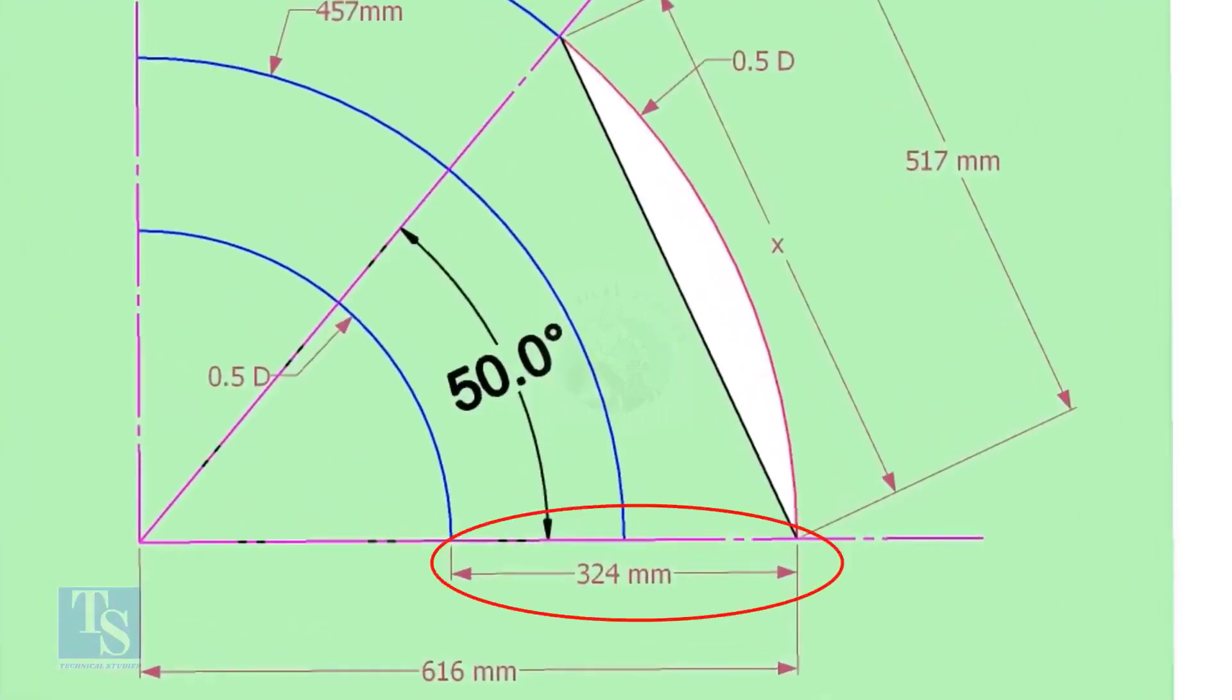Draw another two arcs on both sides of this arc, adding and subtracting half OD of the elbow.